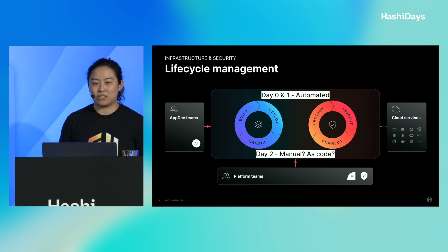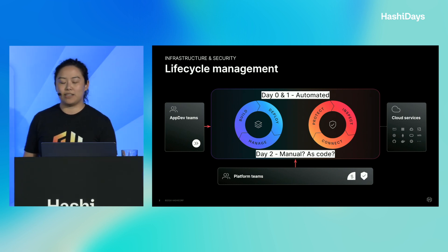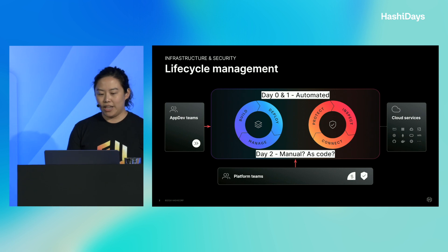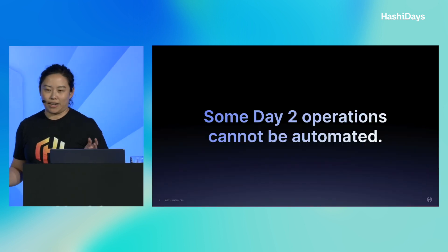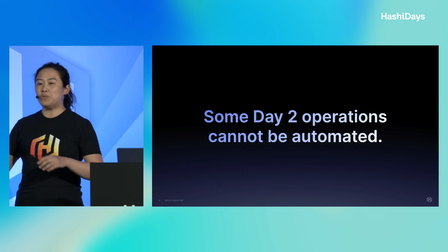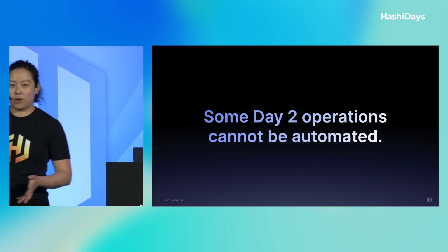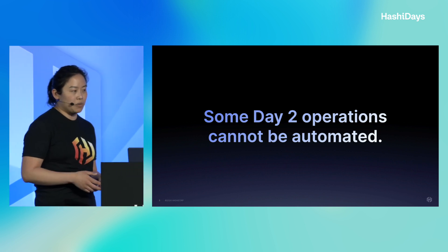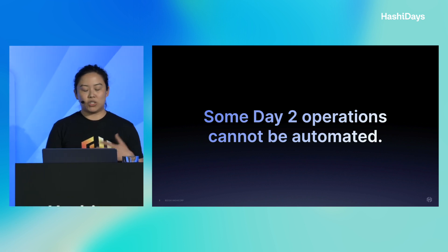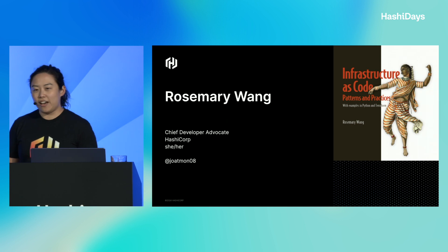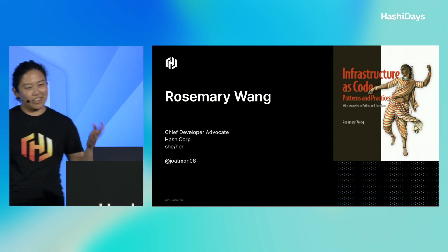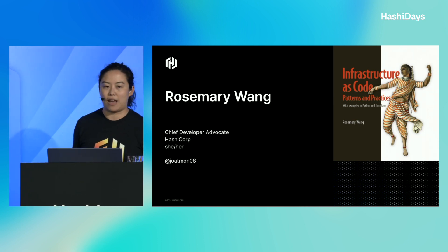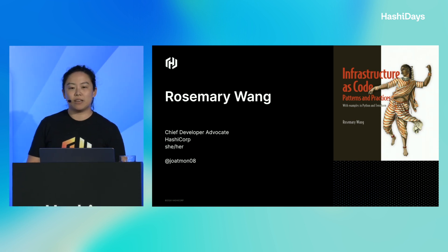What do you do when you have to break glass or fix something? You have to go in because there's an incident, and you can't push things as code because things are really bad, so you have to fix it manually. It turns out some day two operations cannot be automated. Beyond that, you have infrastructure and security resources you will never be able to automate — data center resources or networking resources you have to create manually. You configure as much as possible with automation, but the reality is you can't automate them all.